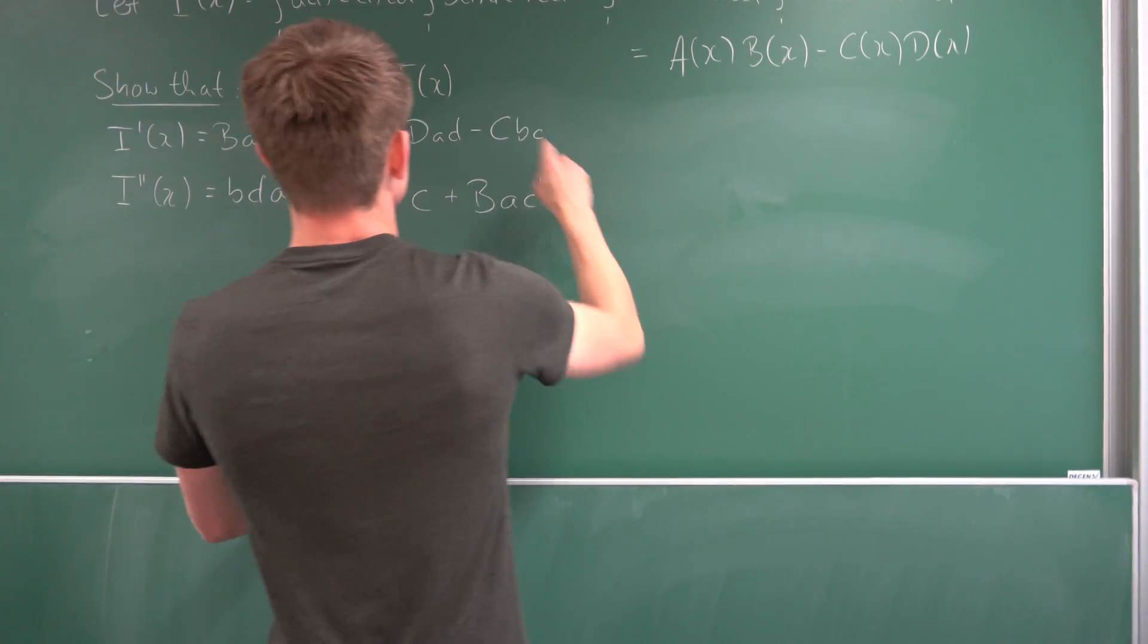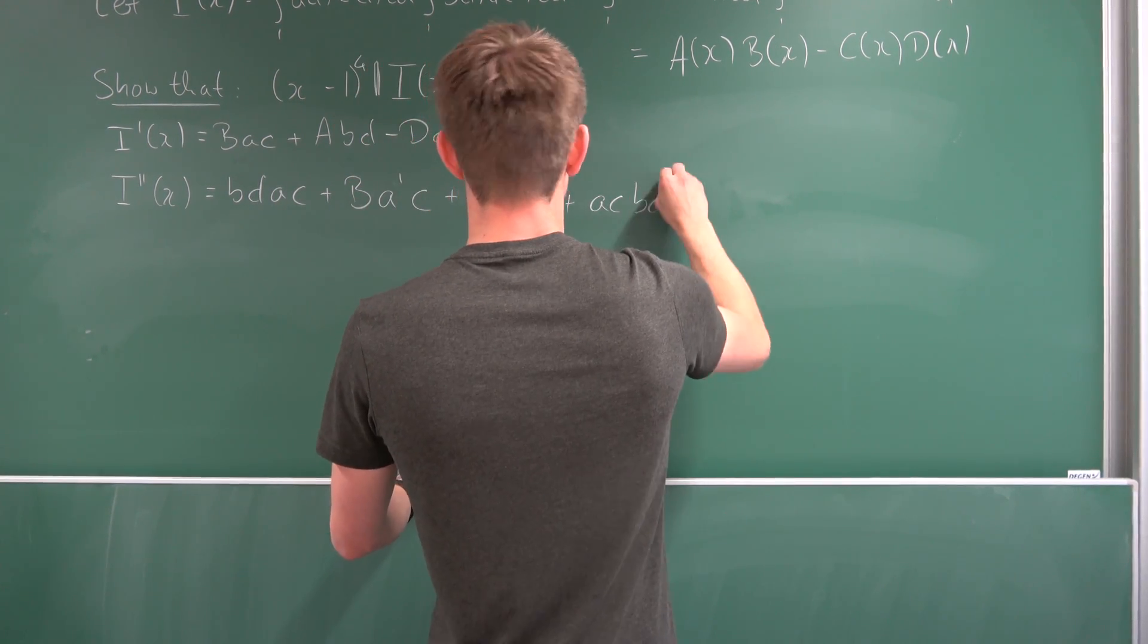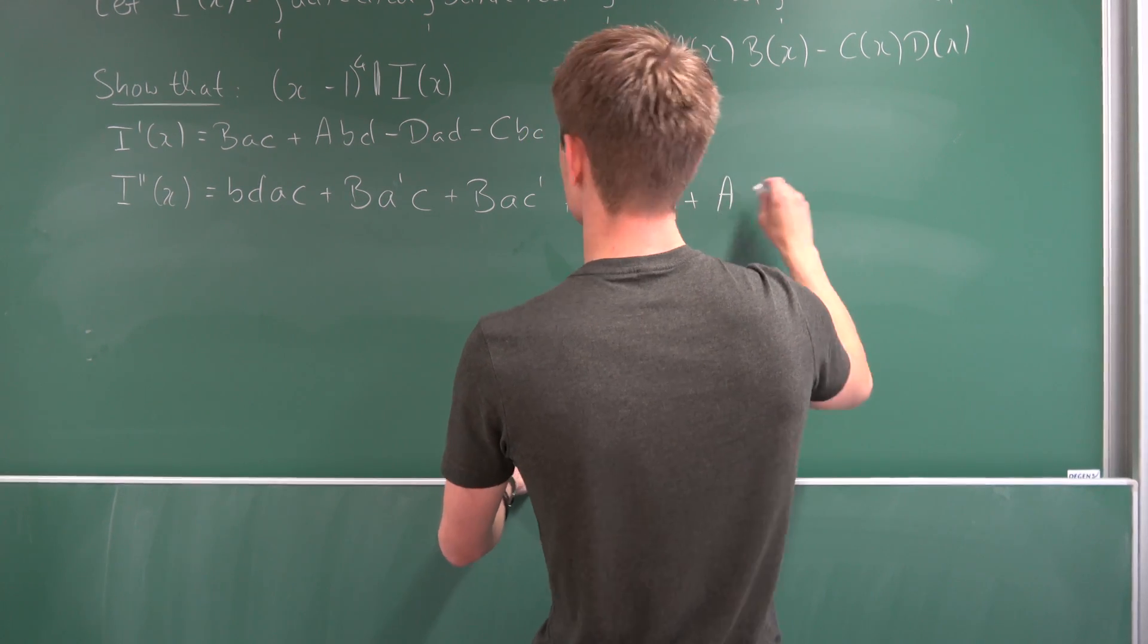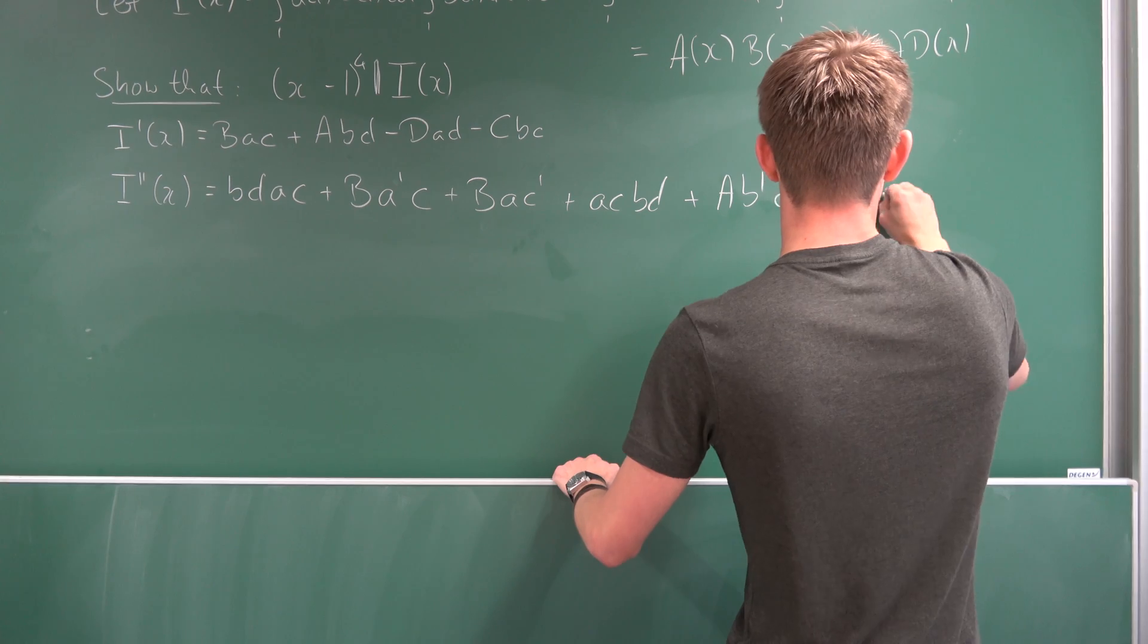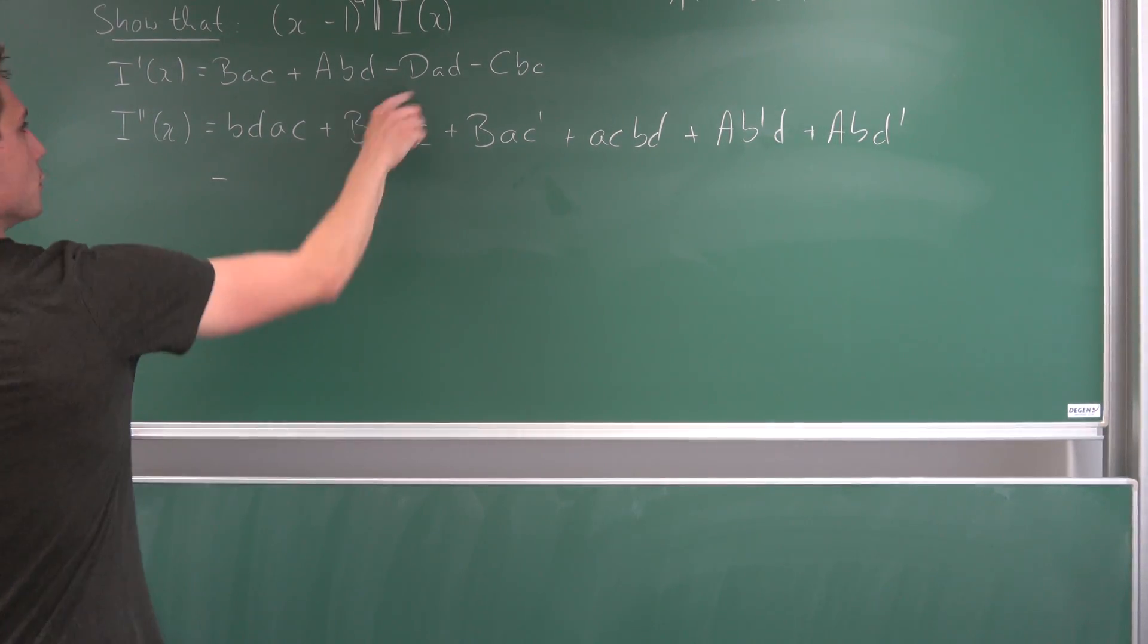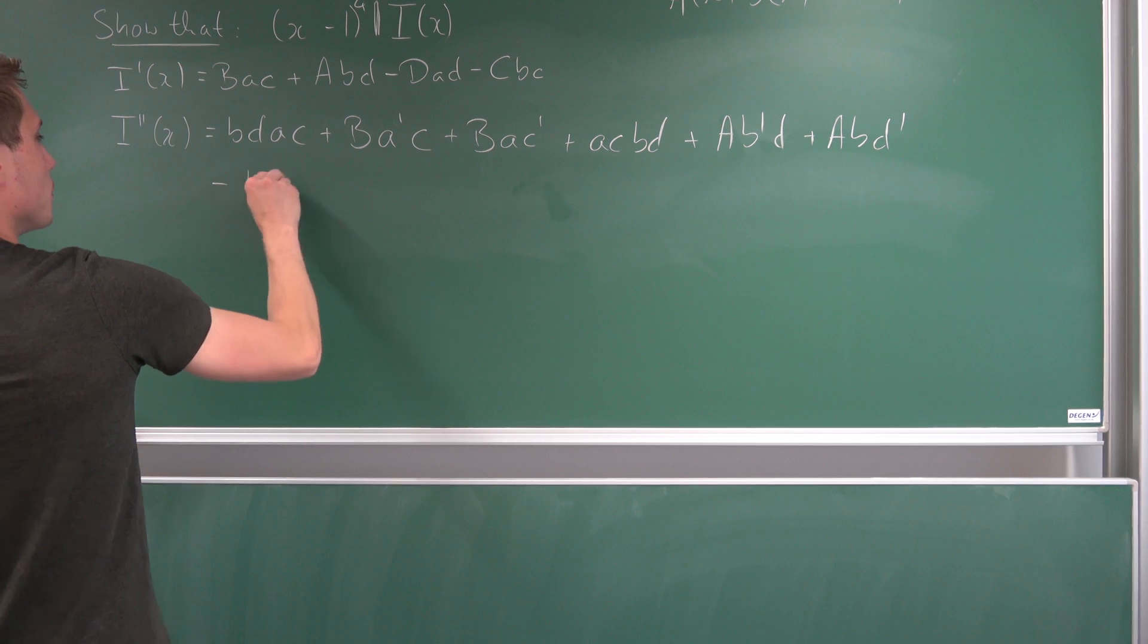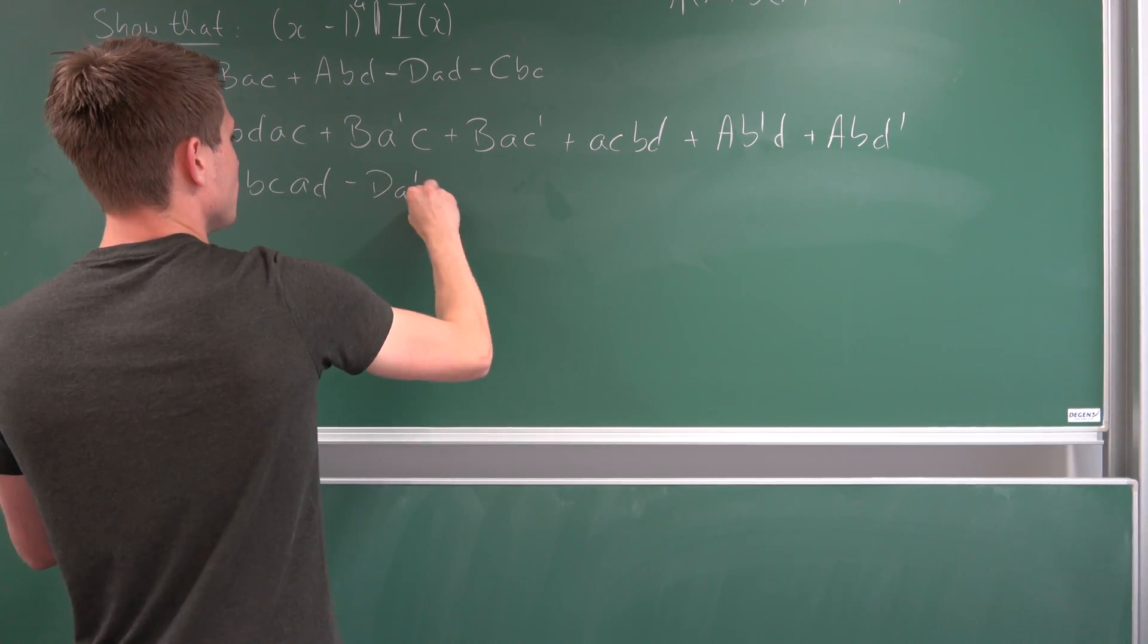So the next one plus A is A times C, B times D, plus A and then B prime D plus A B D prime. And now for the negative terms, so this one is going to be A times B times C, A times D, negative D A prime small D.